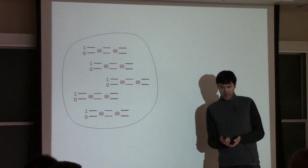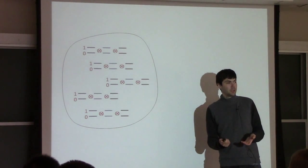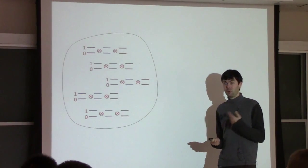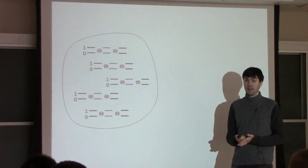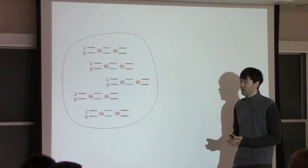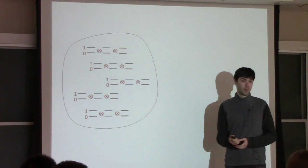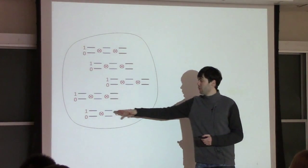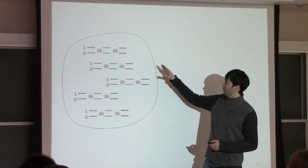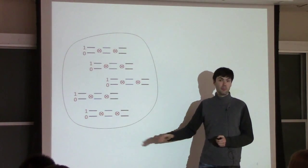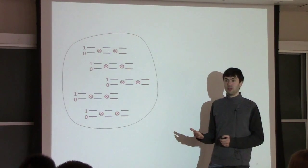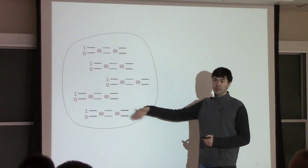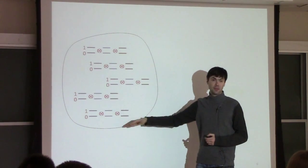The answer of a quantum measurement is a probability, and to determine a probability you need to perform the same experiment many times — an ensemble measurement. You can do this on a system of coupled qubits, or you can have multiple copies of the same system and measure them at once. Repeat on the same system 100 times, or measure 100 different copies — it's all the same.